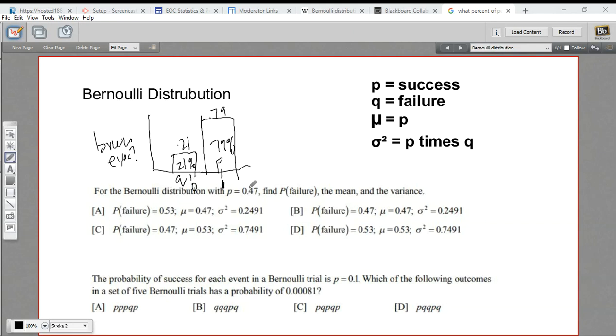So in a Bernoulli distribution, it's a very simplified case of probability. You can only have a yes or a no, and that makes the mean and the variance really easy to calculate.